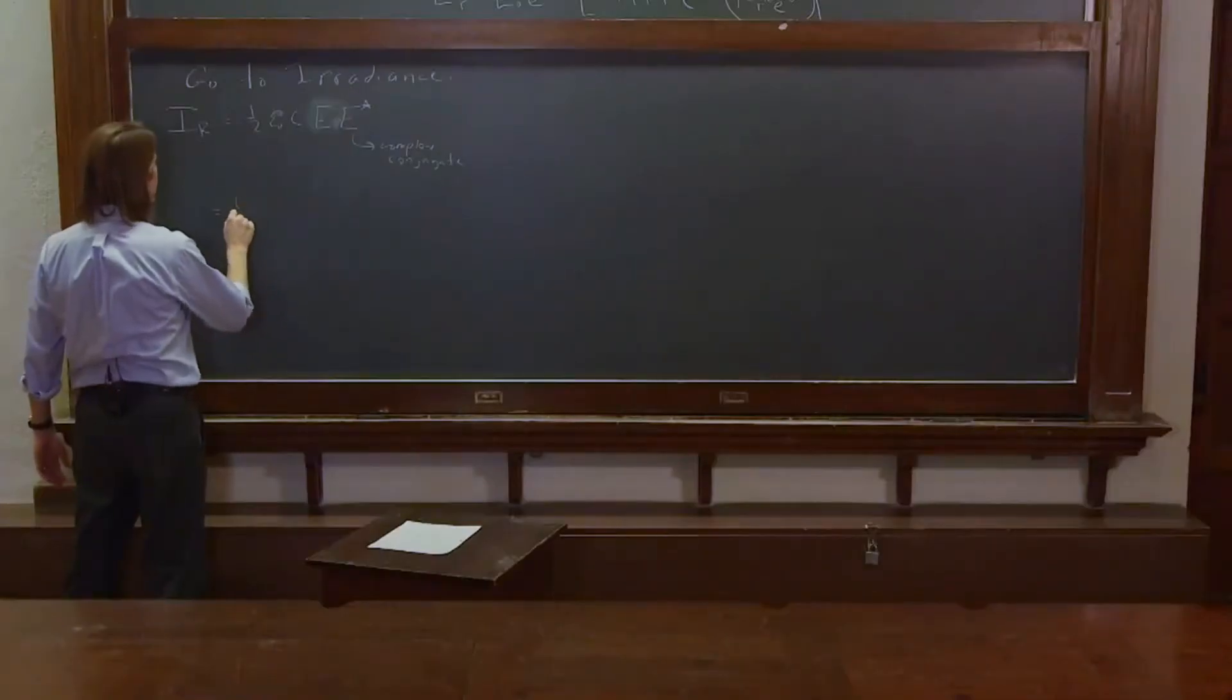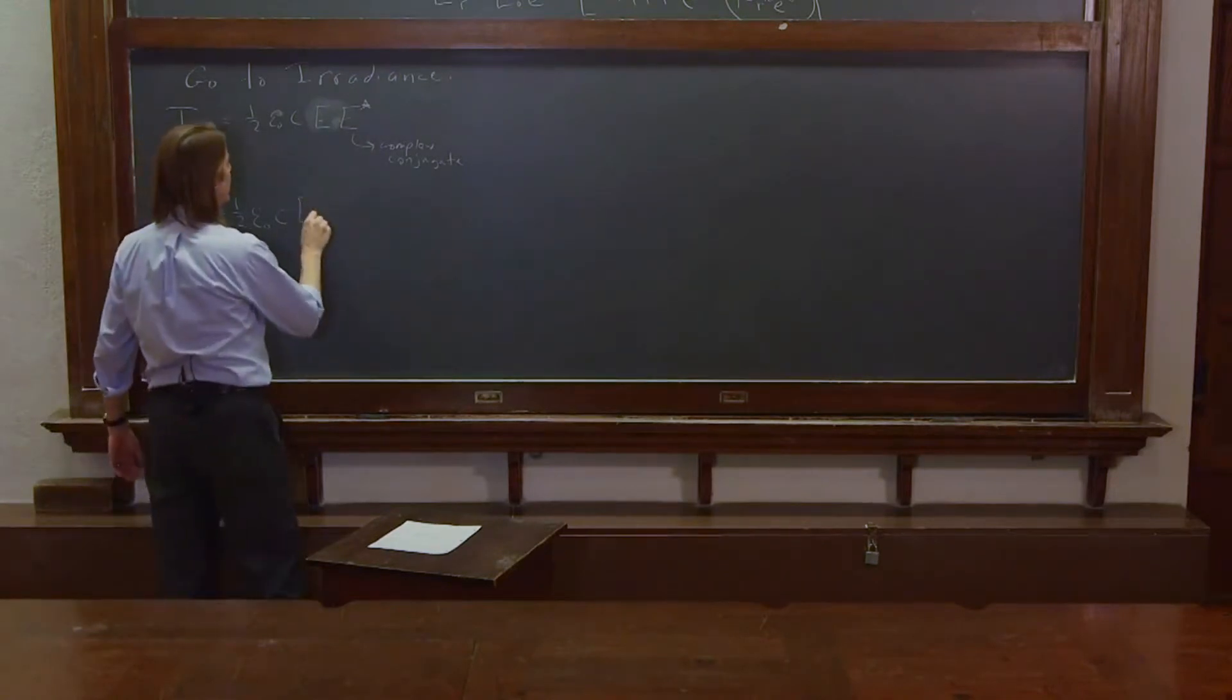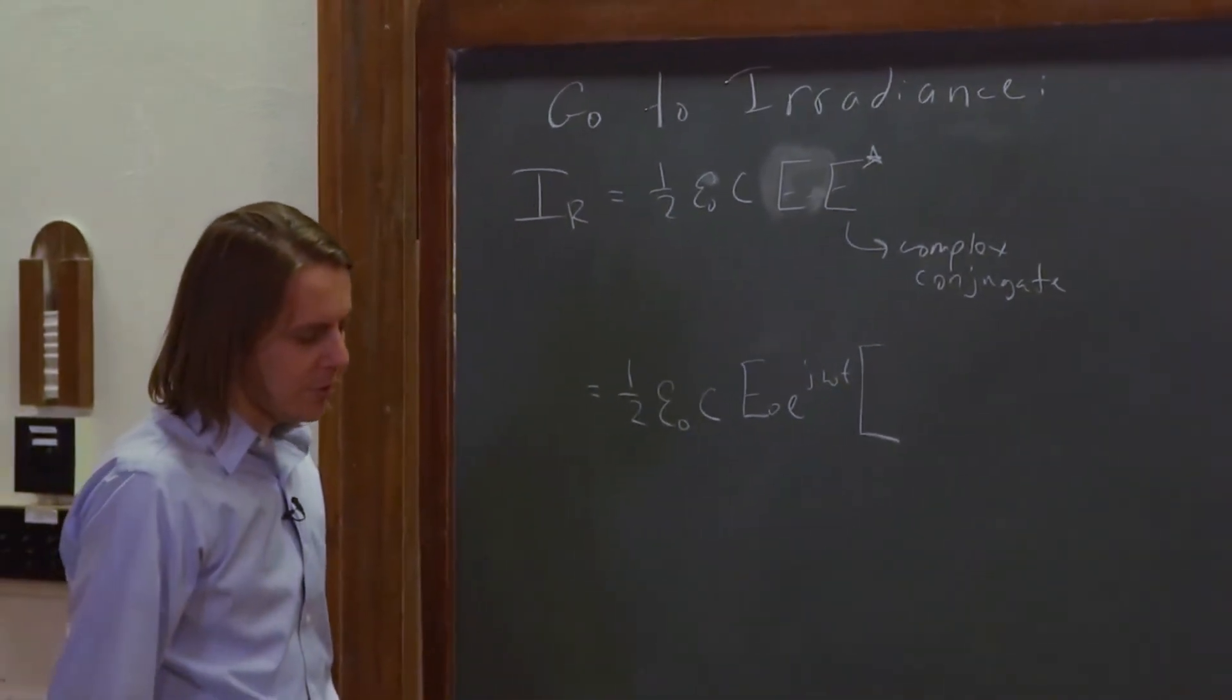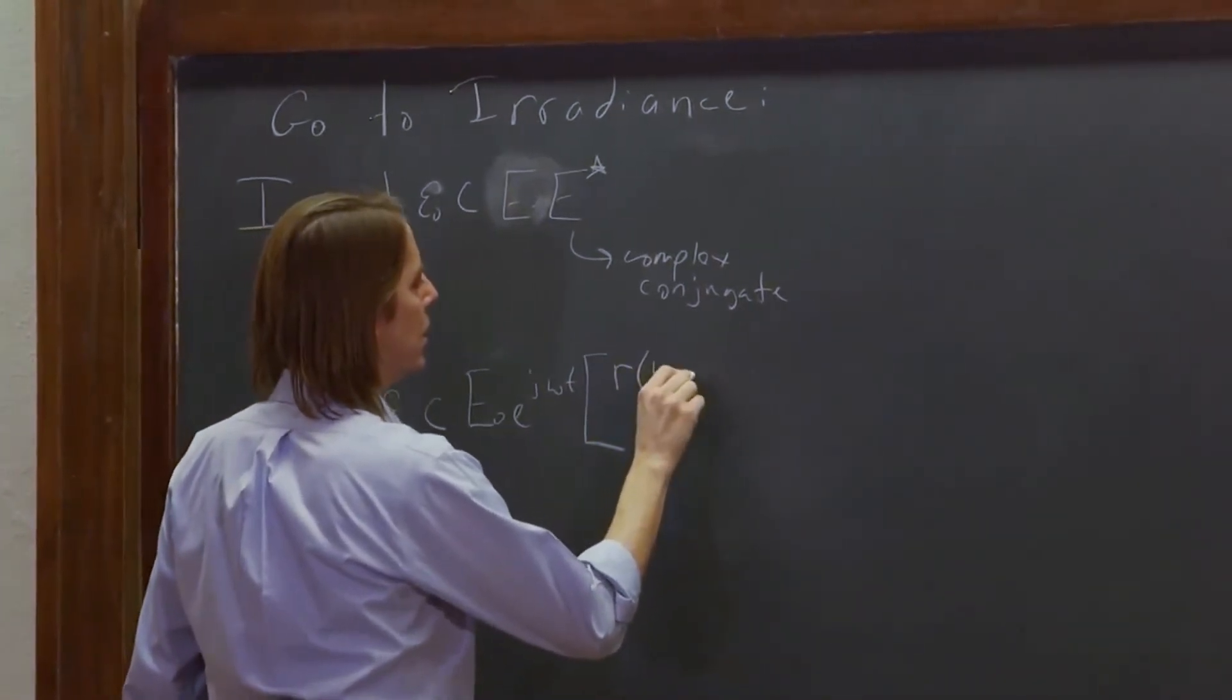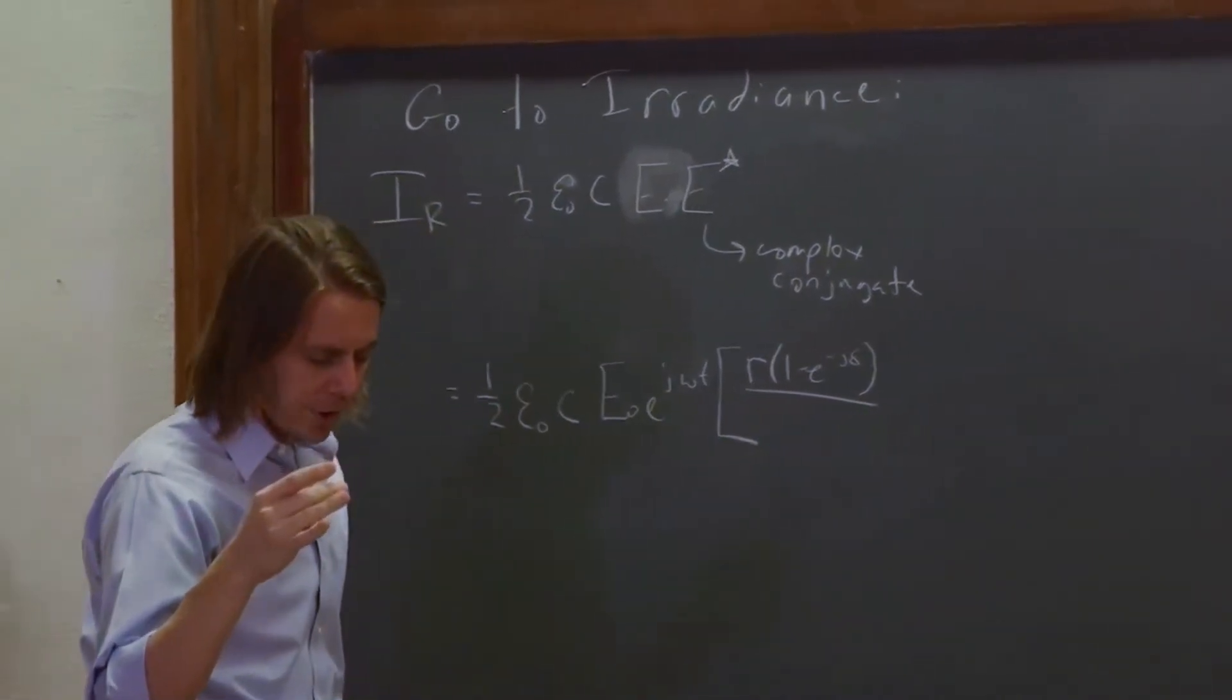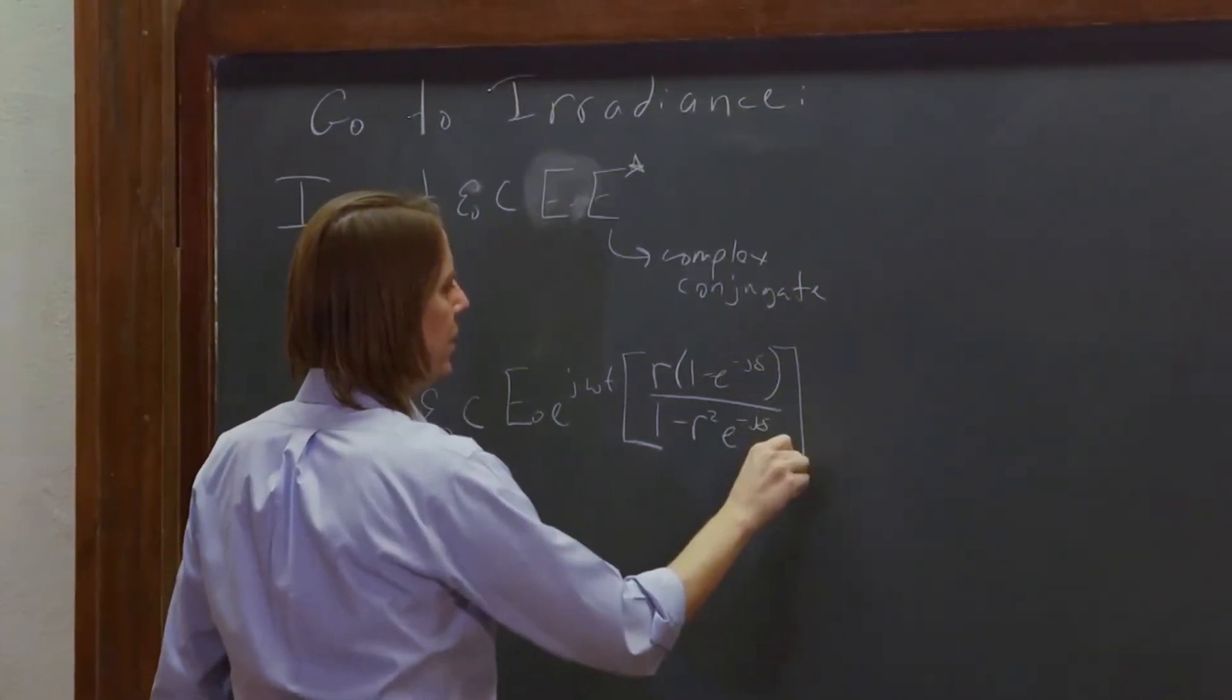1/2 epsilon naught C. And if we just write E as it is, it's E naught E to the J omega T times this big mess, SR times (1 minus E to the minus J delta) over, I forgot, over (1 minus R squared), 1 minus R squared E to the minus J delta. All right? So we have that.